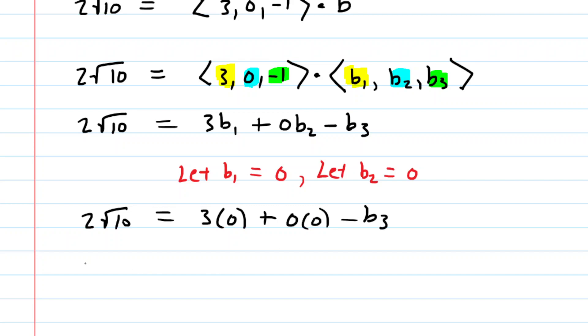Now we'll just solve for B3. So we have 2 square root of 10 is equal, of course these zero out, so it's equal to negative B3. You could multiply both sides by negative 1, and you get negative 2 radical 10 is equal to B3.